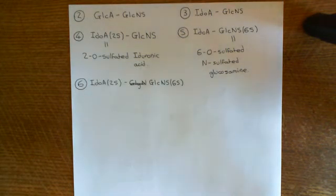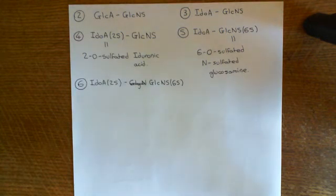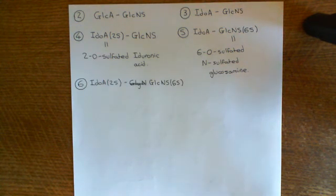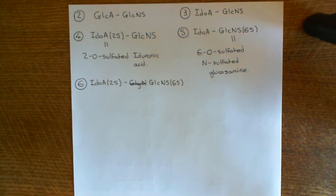These are the six disaccharides which are generally used within glycosaminoglycans — not an exhaustive list, but the six main ones. What you're going to do is take these disaccharides and polymerize them together, and when you do that, you get what's known as a glycosaminoglycan. Depending on how much of each disaccharide you use, you'll create a different glycosaminoglycan, and we'll continue this discussion in the next video.